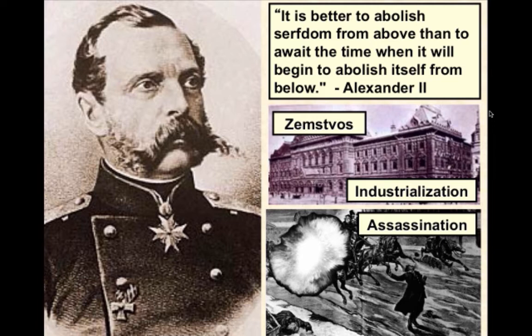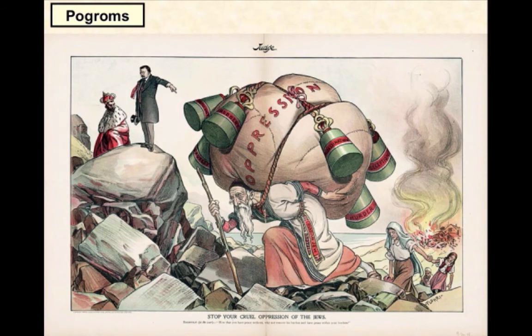Many reforms were rolled back, the state took control of the zemstvos, and censorship, secret police, and exile became more commonplace once again. A policy of Russification, or forced nationalism, was also instituted. All citizens were required to learn the Russian language and follow Russian customs, including the Christian Orthodox religion. People and groups who did not follow these commands were persecuted. For example, several pogroms occurred, which were riots organized against the Jews. This lithograph shows U.S. President Teddy Roosevelt telling Nicholas II to stop the oppression of the Jews.